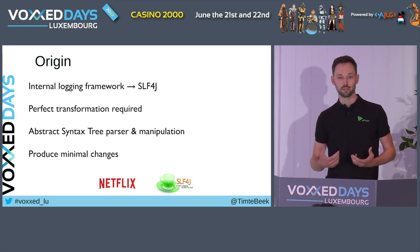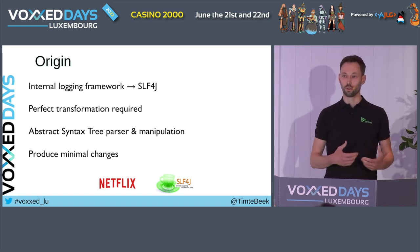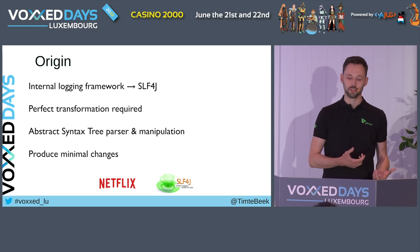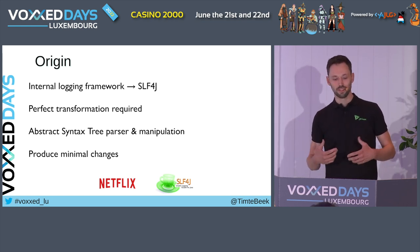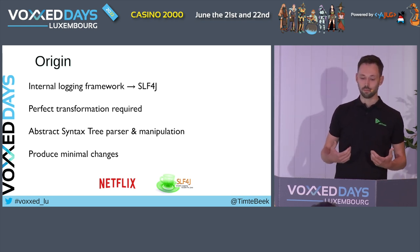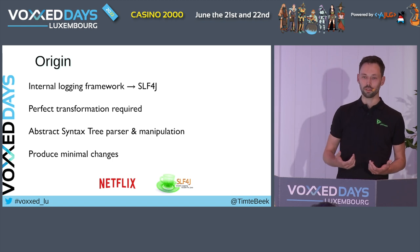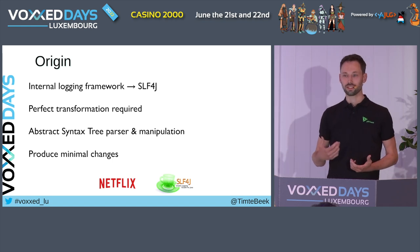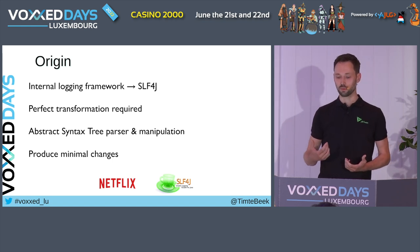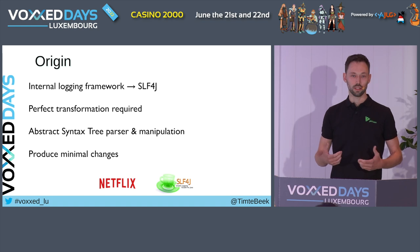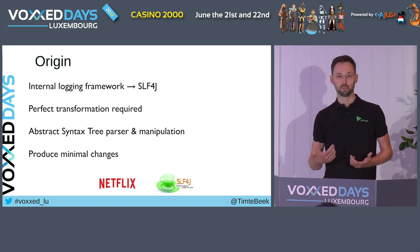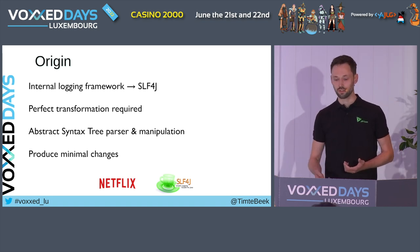This model can then be modified to replace the old logging statements with calls to SLF4J. Then the migrated model is written out as close as possible to the original source code. This way, the applied changes are minimal, leaving surrounding code untouched.